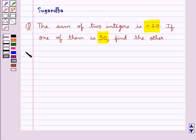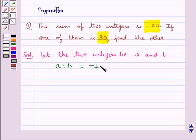Let's move on to the solution now. Let the two integers be A and B. We are given that the sum of these two integers is minus 20. So we have A plus B is equal to minus 20.